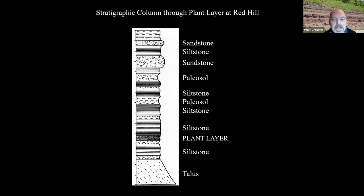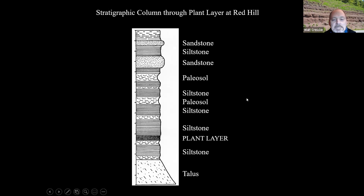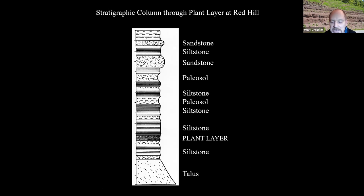Here's a stratigraphic column that shows the sequence. There are some sandstones that come in whenever there's higher velocity flooding and the dropping out of sand in this very dynamic river floodplain environment.